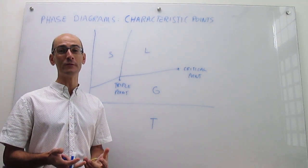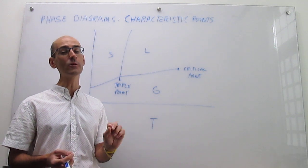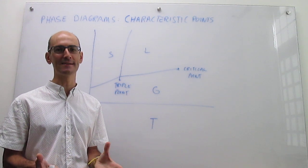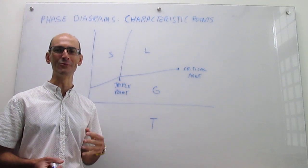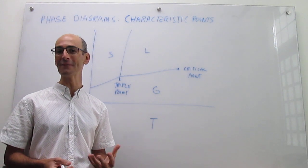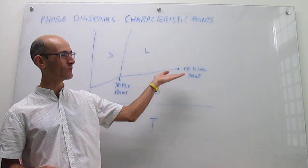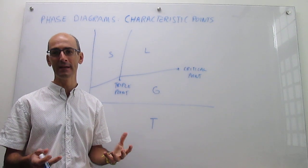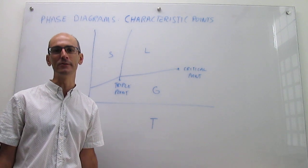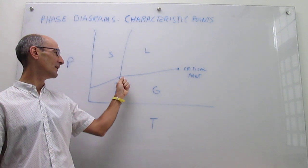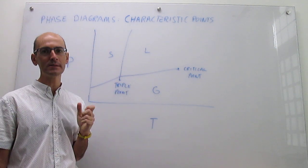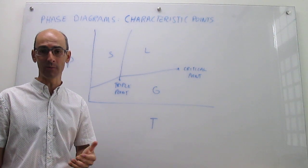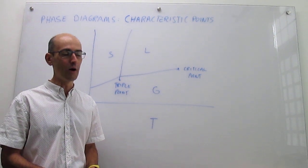A good way to visualize what the triple point is, is to imagine a liquid that is freezing and boiling at the same time. That's where you have an equilibrium between solid, liquid, and gas. I'm going to link to a video so you can see how a triple point looks. That's something that happens for all substances. This triple point occurs at various conditions of pressure and temperature for each substance, so it's kind of a fingerprint of the substance.